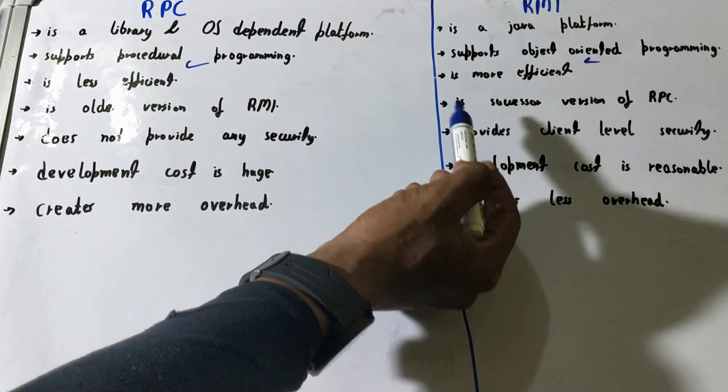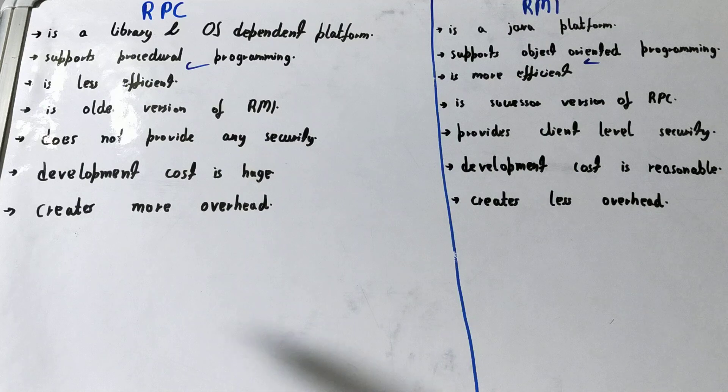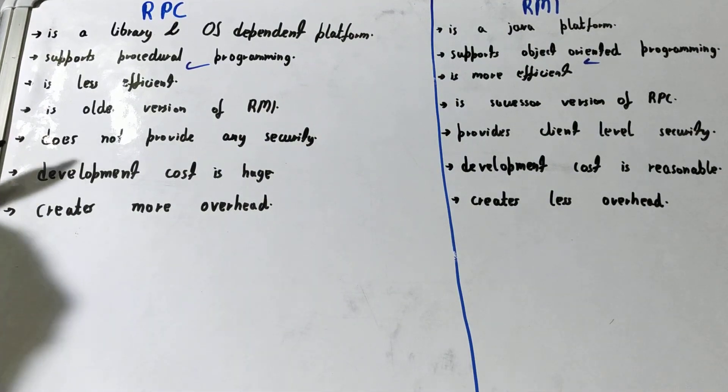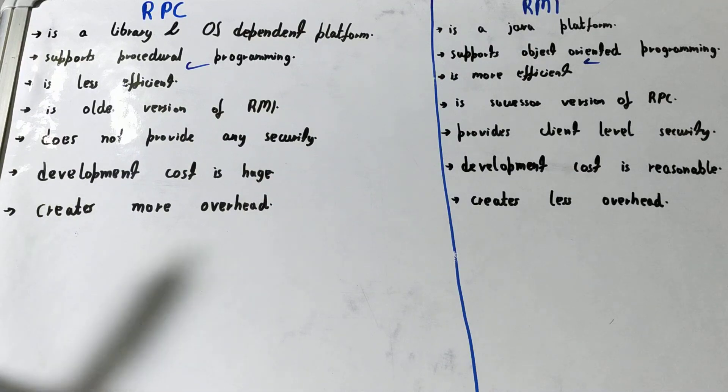RPC is the older or base version, while RMI is the successor version derived from RPC.